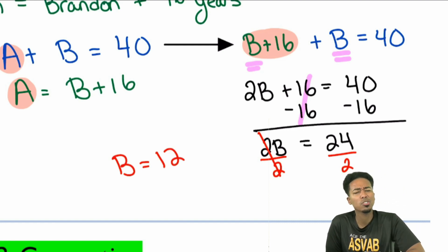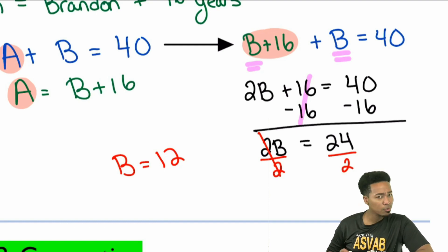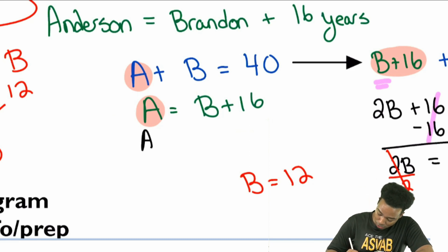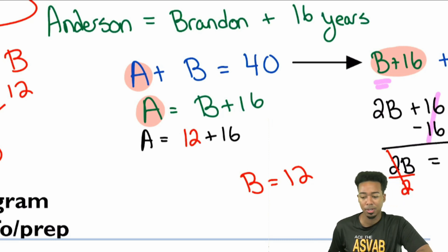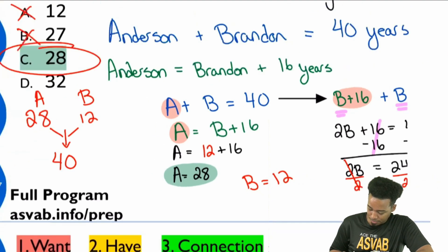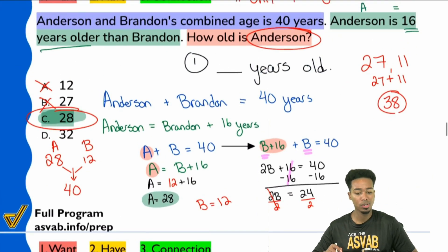Everybody, is 12 the answer? Is 12 the answer? Is B equals 12 the answer? No, because B represents what? B represents what? Yeah, B represents Brandon's age. How do we get to Anderson's age? Right over here. Anderson is 16 years older than Brandon. If we plug that right in, we get Anderson equals 12 plus 16. Everyone, what's 12 plus 16? What's that going to be? 28. And so A equals 28. And there's the correct answer. Boom. Both ways, we can still get it. Both ways.